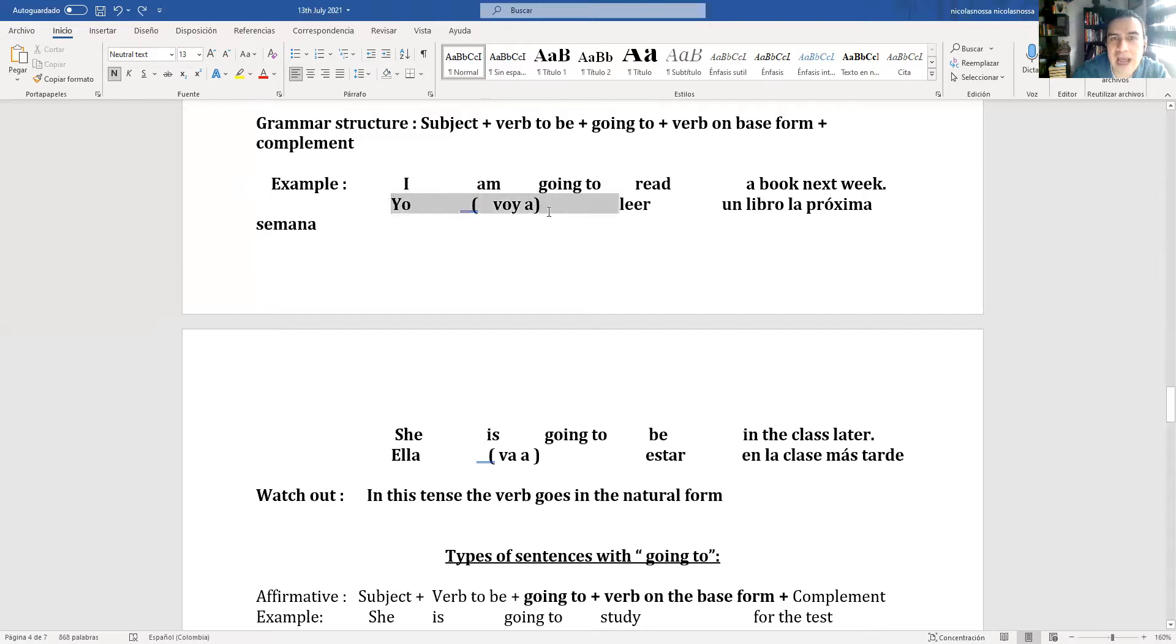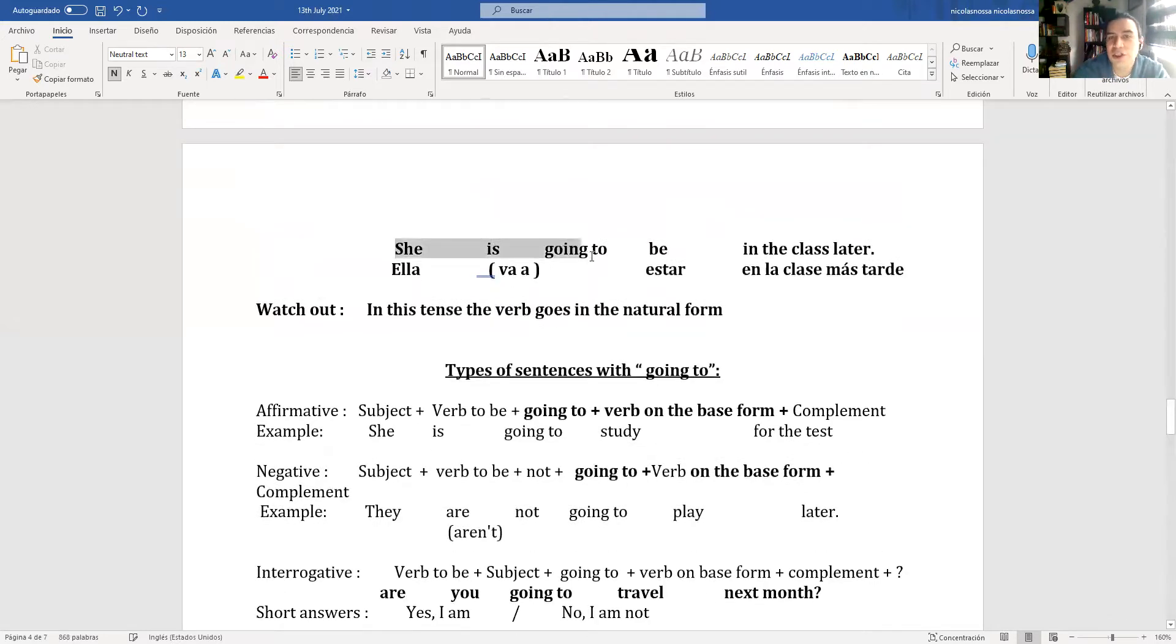Translation: yo voy a, all this I am going to would translate as yo voy a. Yo voy a leer un libro la próxima semana. Don't forget the verb to be, that is a very common error. I going to, no. I am. If it's third person singular, she is going to be in the class later. Ella va a estar en la clase más tarde.